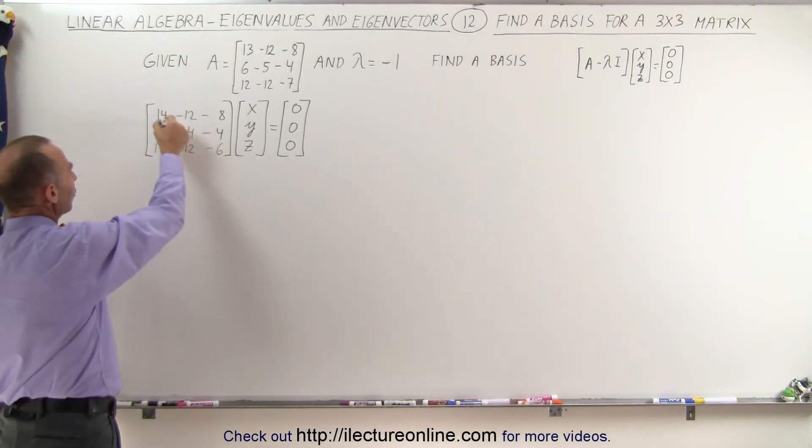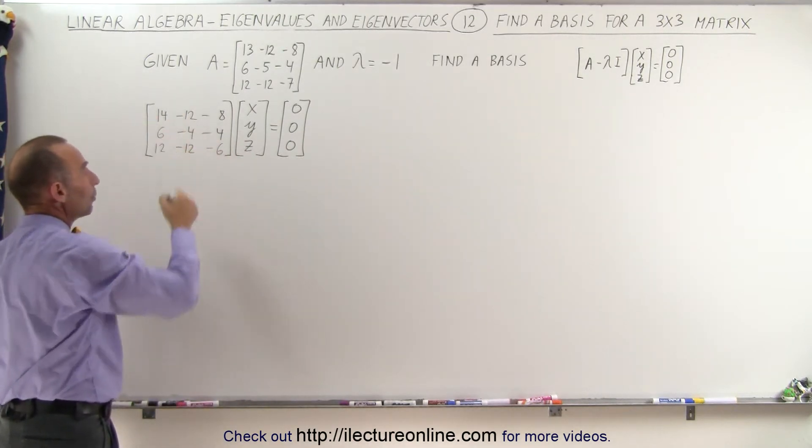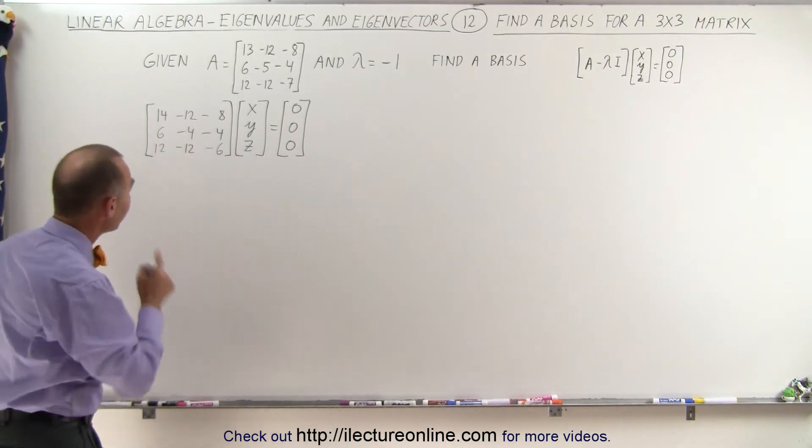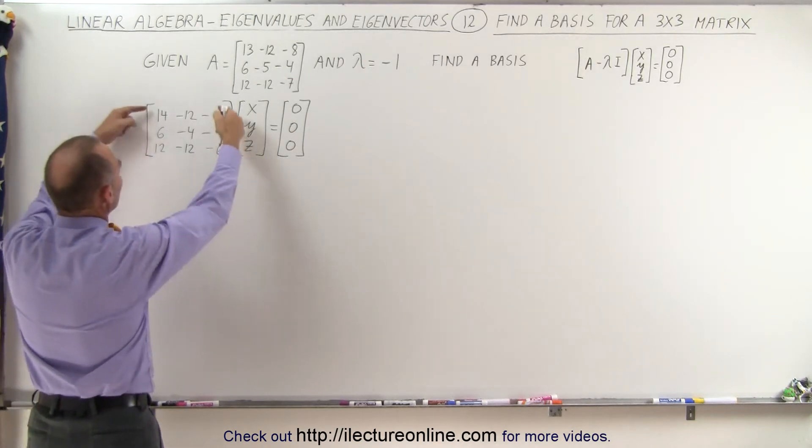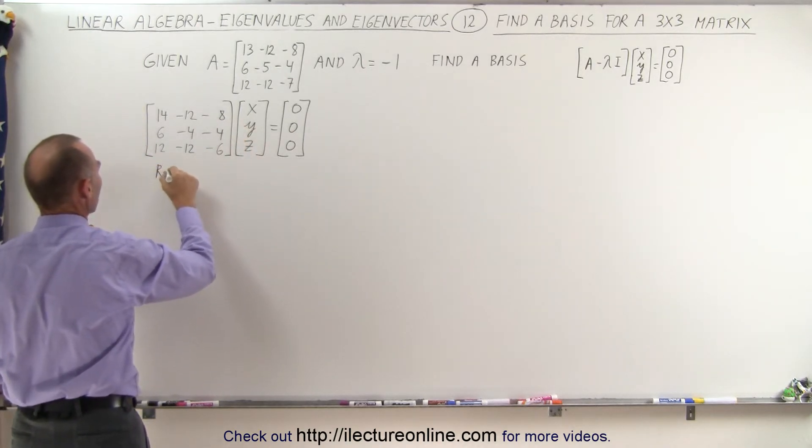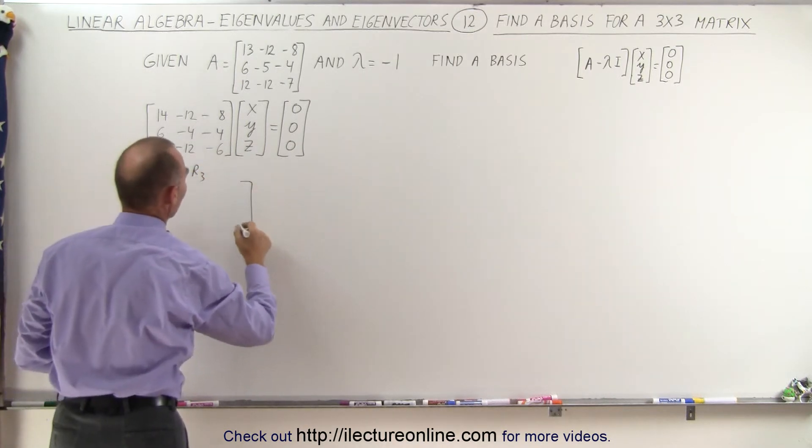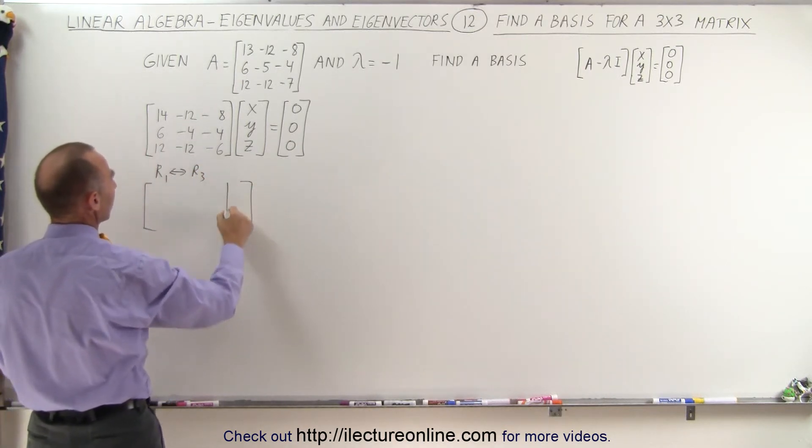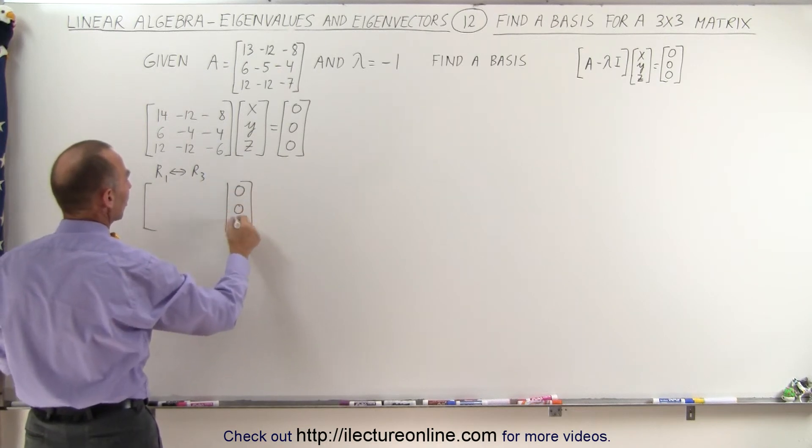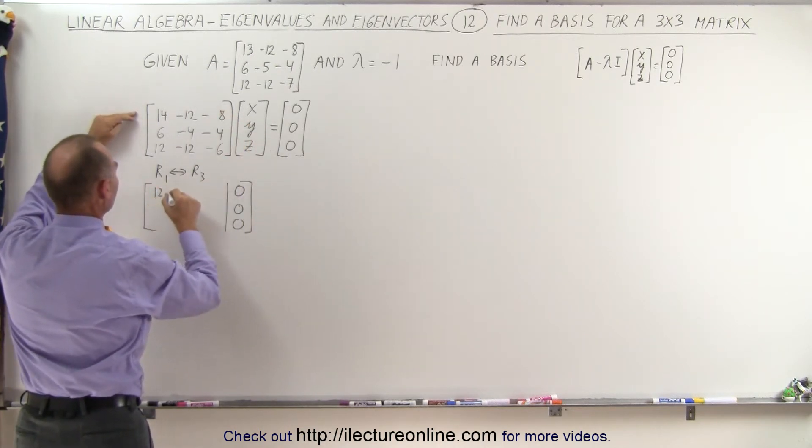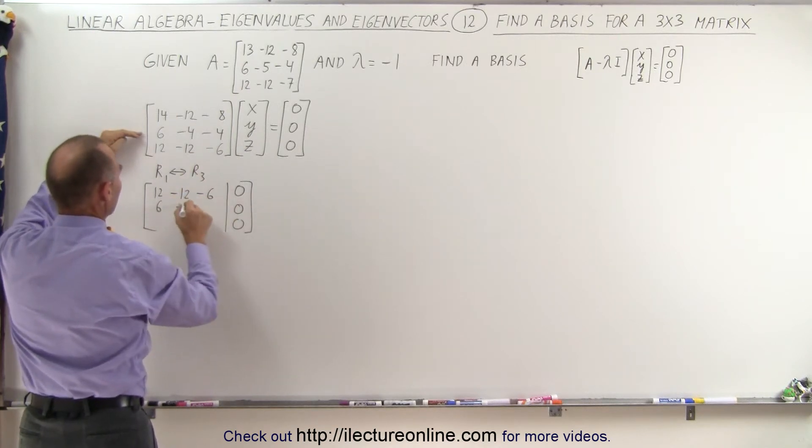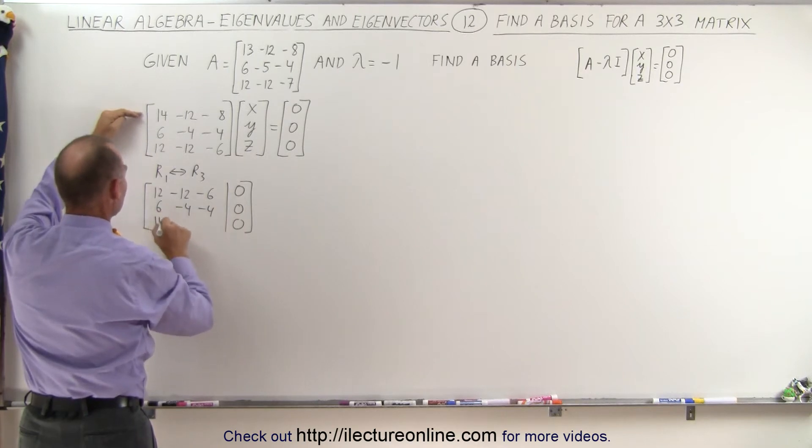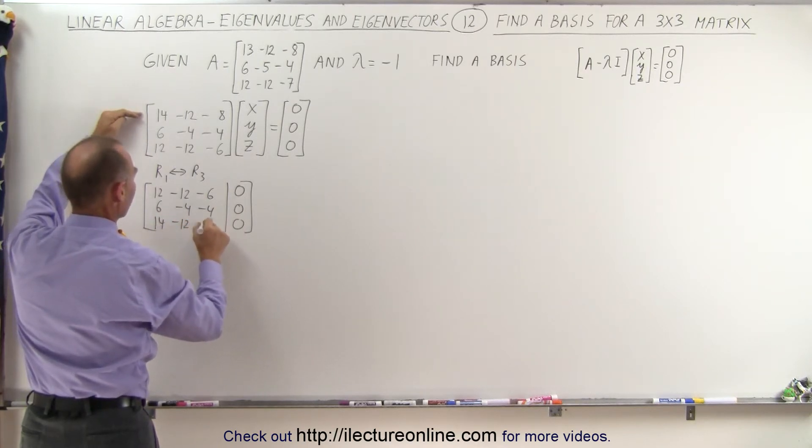All right, I'm trying to make these into zeros. We're trying to get this down to the reduced row echelon form. To do that, I might be better off by switching row 1 and row 3. I'm going to start with that. R1 switched with R3 will give us the following, and we're going to write this as an augmented matrix. So we end up with 0, 0, 0. Row 3 goes to row 1, 12, minus 12, minus 6. We have 6, negative 4, negative 4, and this goes down here, 14, minus 12, minus 8.